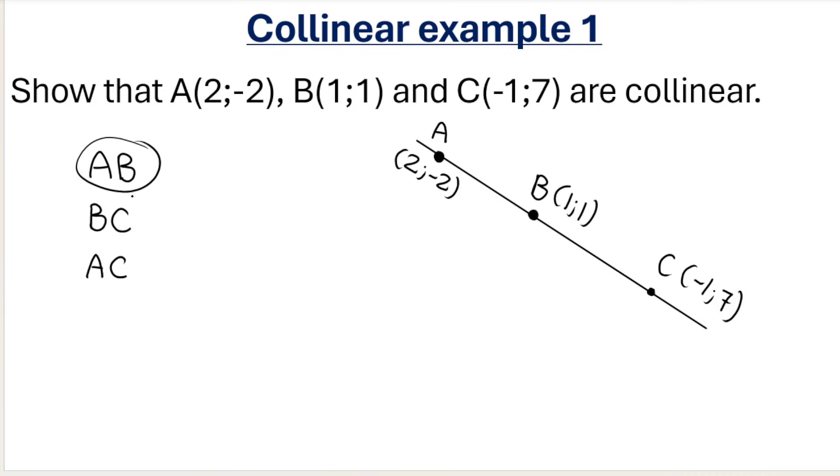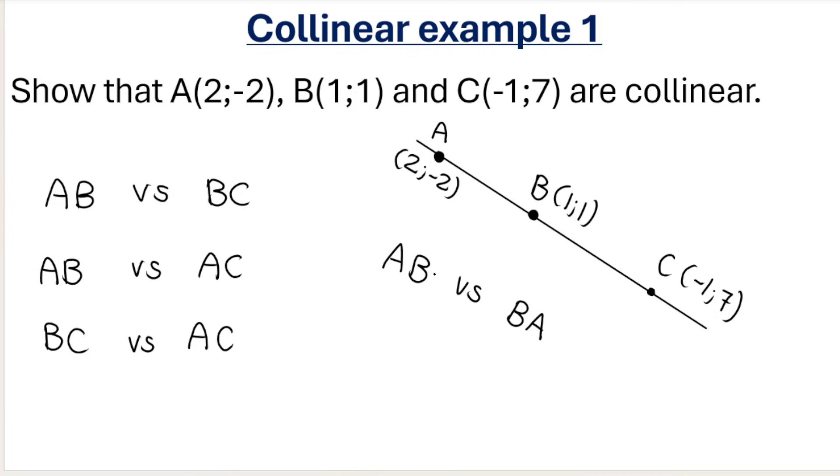So I'm saying A and B, then I'll compare that to, for example, B and C. I can pick any two combinations: AB versus BC, AB versus AC, or BC versus AC. I can't compare AB versus BA—that's the same thing. I've just changed the order of how I've named the points. I have to compare two different pairs to each other.